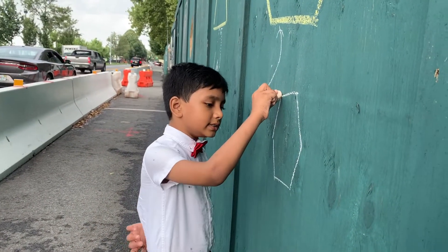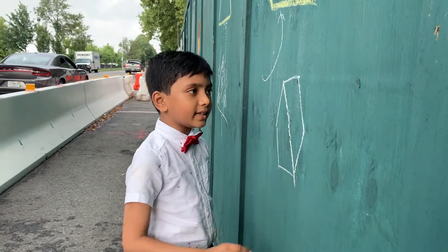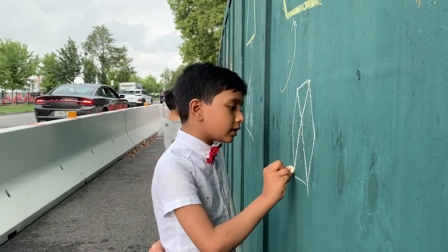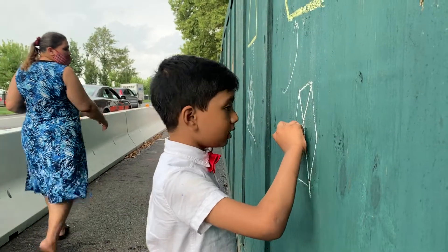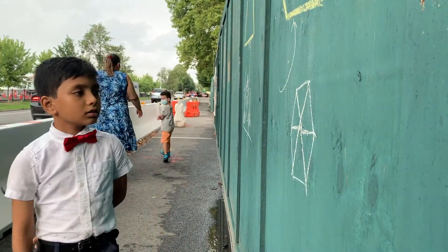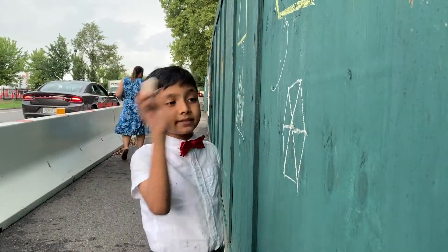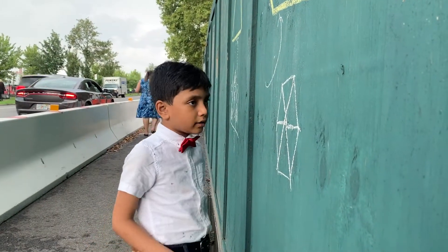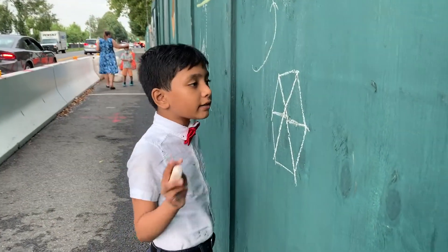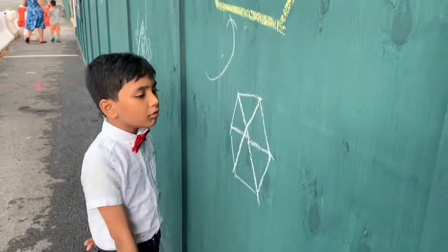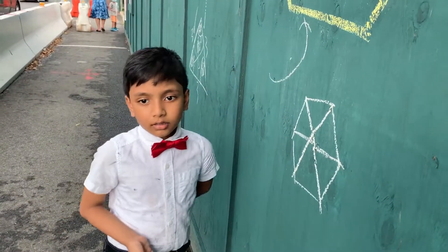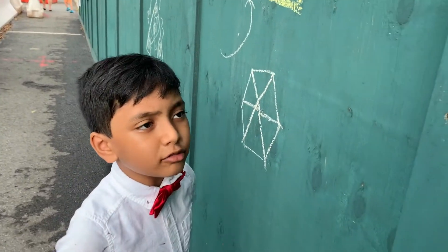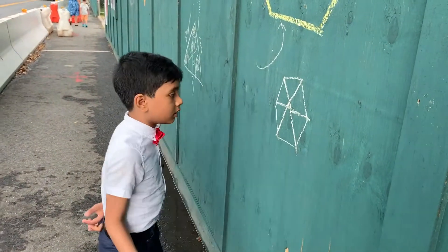We're going to slice the hexagon up — first into two, then three — giving us six segments of equilateral triangles. That means there are six equilateral triangles in a hexagon.